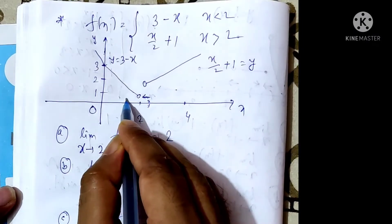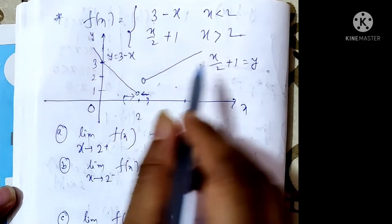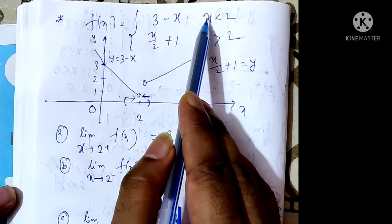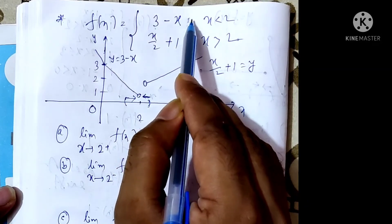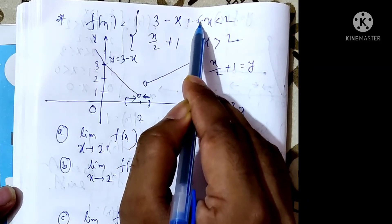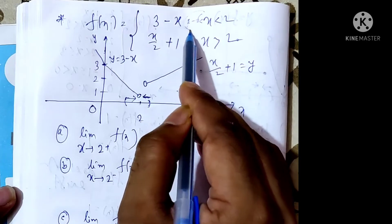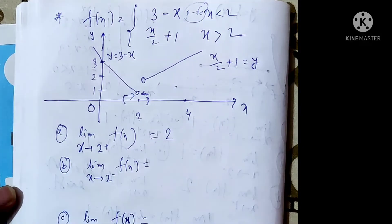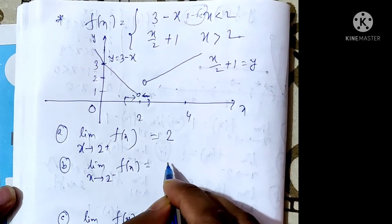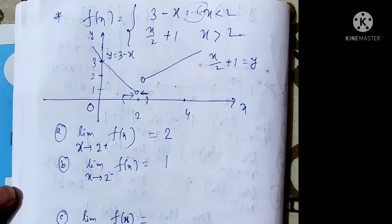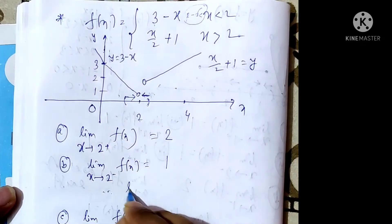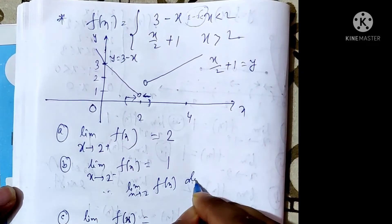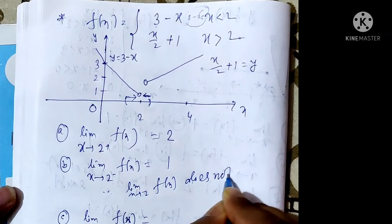For the limit as x tends to 2⁻ of f(x), we approach from the left, meaning 2 minus delta less than x less than 2. In this region the function is f(x) = 3 minus x, so the value is 3 minus 2 equals 1. Therefore, the limit as x tends to 2⁻ of f(x) equals 1. Since the right-hand limit (2) and left-hand limit (1) are not equal, the limit as x tends to 2 of f(x) does not exist.